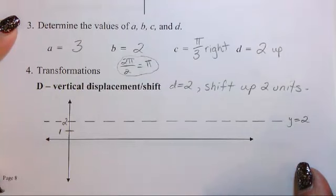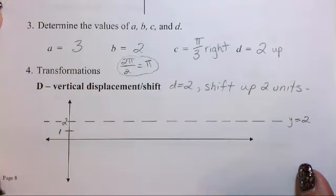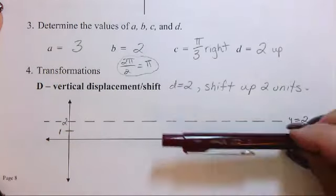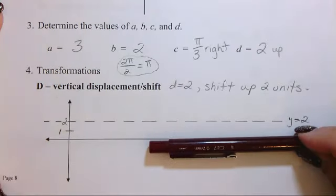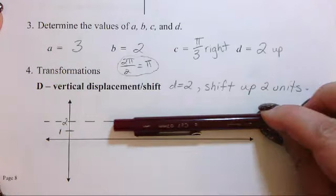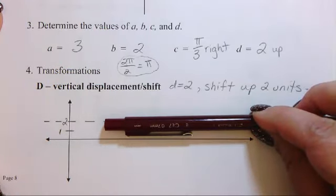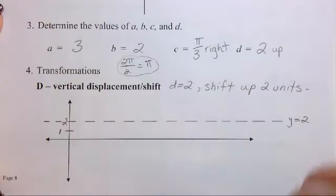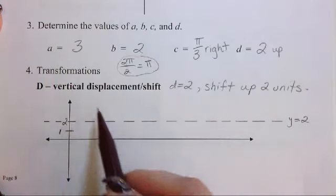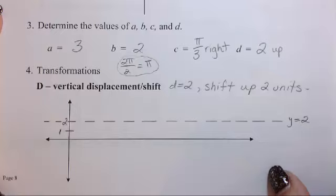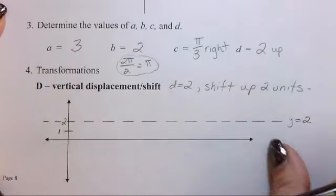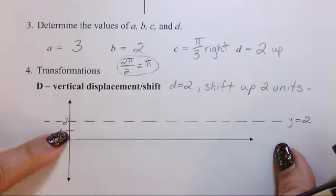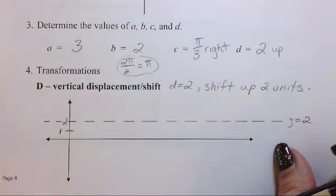We're first going to look at the transformation of D, which is a vertical displacement or shift. So this basically moves our entire graph from here up two units to here. So now this is our new x-axis. So it's actually our y equals 2 line that the sinusoidal function is going to oscillate on. Okay, now I've just drawn a dotted line so I can keep that for a reference.